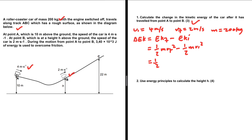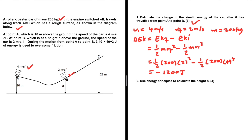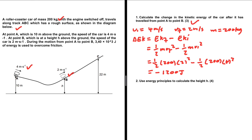Substituting in: the mass is 200 kg, the final velocity at point B is 2 m/s squared, minus half the mass (200 kg) times the initial velocity of 4 m/s squared. This gives us ½ × 200 × 2² − ½ × 200 × 4², which equals −1200 joules. The SI unit of energy is joules. That's question one — nothing complicated, just calculating the change in kinetic energy.